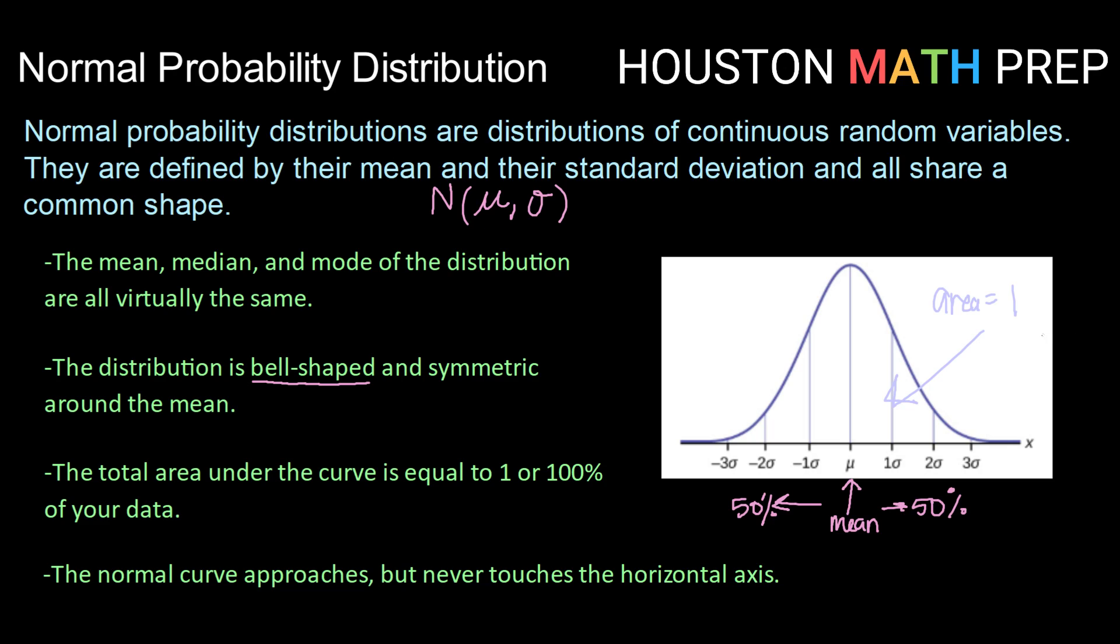And then also the normal curve approaches, but never actually touches, the horizontal axis. So over here on the left side and over here on the right side, once we get out past about three standard deviations from the mean, our curve gets really, really close to the horizontal axis, but never actually touches.